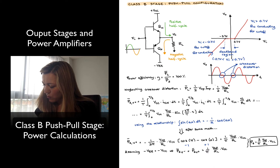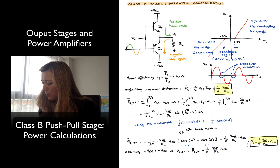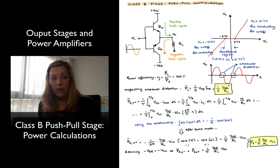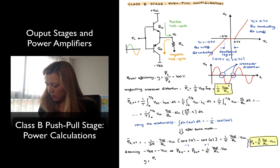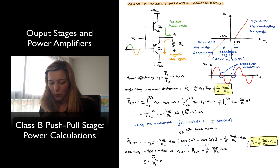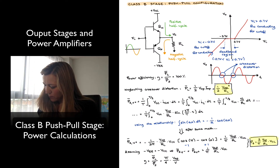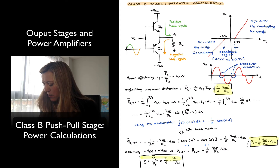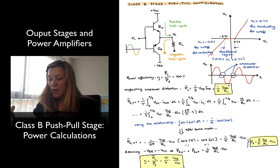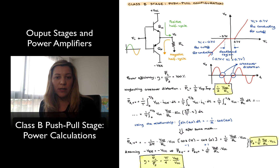Now we have an expression for the average power delivered to the load and the average power delivered by the supplies, and we are ready to calculate our power efficiency η, which is PL_average divided by PS_average. When we take the ratio of those two quantities, we end up with π/4 times VOP divided by VCC.